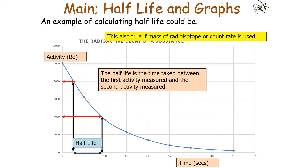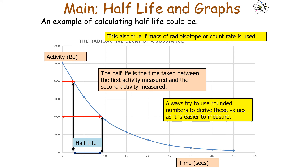In this example, we find the time when activity is 8,000 and the time when activity is 4,000, and the difference between the two is the half-life. Always try to use rounded numbers — such as 8,000 and 4,000, 6,000 and 3,000, or 10,000 and 5,000 — as these are easier to measure accurately on your graph.